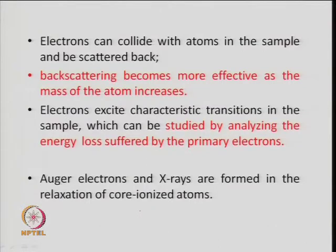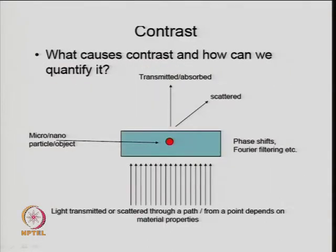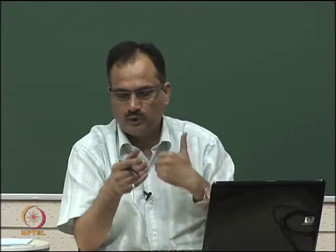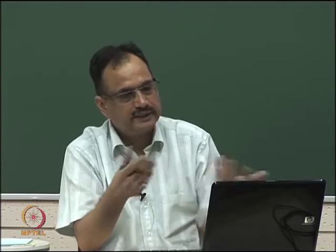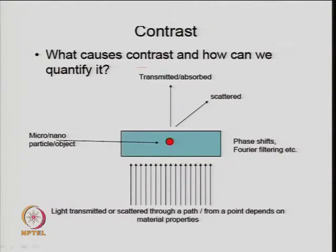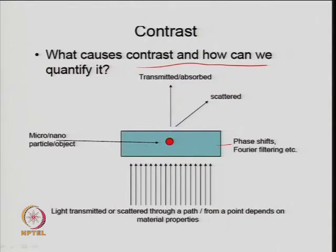When you look at TEM or SEM, you observe contrast — the difference in signal between regions of different density or composition. You can quantify the contrast from the transmitted or scattered beam: the beam is transmitted or scattered through the material from a point depending on the property of the material. Phase shifts, Fourier filtering, micro/nano particles — all of these give diffraction patterns from which information can be obtained.